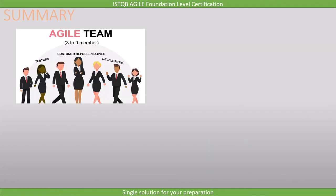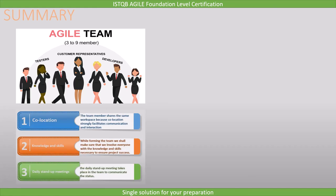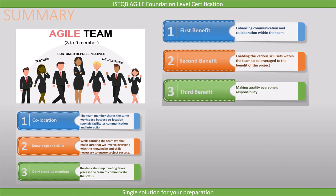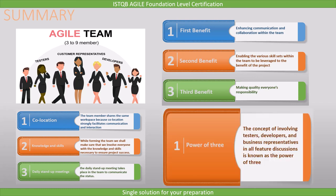Summary: An agile team is formed with three to nine people, which includes tester, developer, and customer representatives. We covered the three characteristics of an agile team: co-location, knowledge and skills, and daily stand-up meetings. We also saw three benefits: enhancing communication and collaboration, enabling various skill sets to be leveraged, and making quality everyone's responsibility. Finally, we defined the power of three — the concept of involving testers, developers, and business representatives in all feature discussions. With this, the lecture ends.